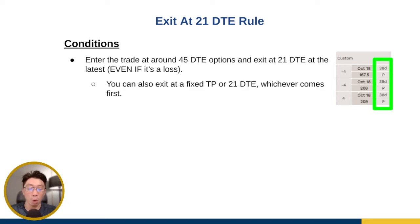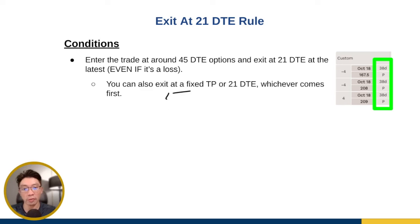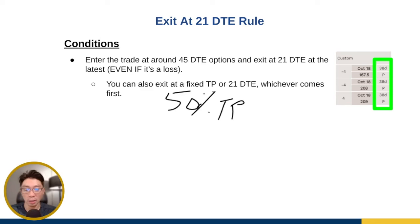You can also exit at a fixed take profit or at 21 DTE, whichever comes first. You do not have to wait all the way to 21 DTE alone. You can also exit at a fixed take profit — let's say 50% take profit. Once it reaches 50% take profit, you can exit the trade. But if it doesn't reach 50% take profit, then once it's 21 DTE, you just close the trade. The Tasty Trade team have done research and found this also gives pretty good results.